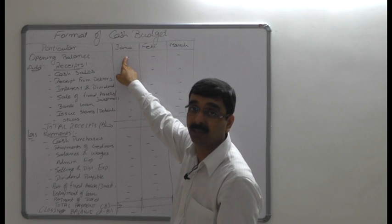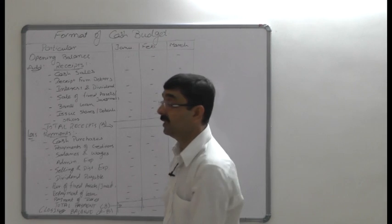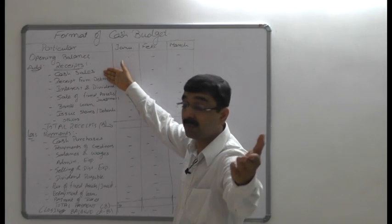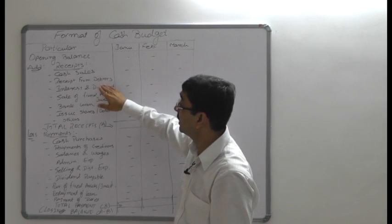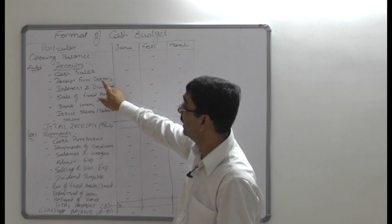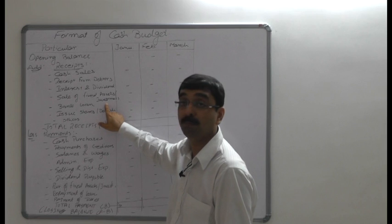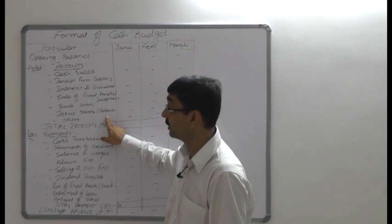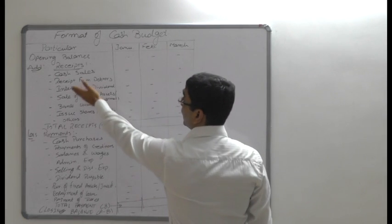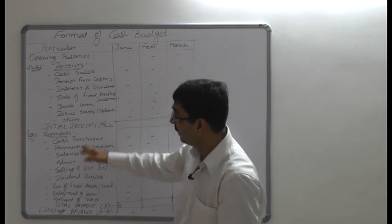The opening balance for the first month is recorded, and then all receipts are added to it. Receipts may include cash sales, receipts from debtors through credit sales, interest and dividend income, sale of fixed assets and investments, bank loans, and issues of shares and debentures. All these incomes are added in January to find out the total receipts.